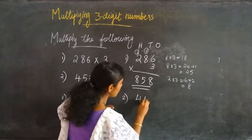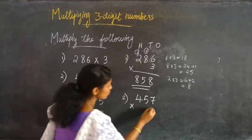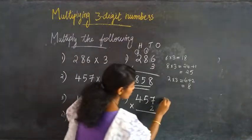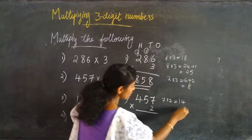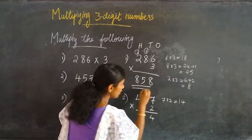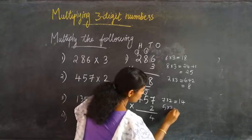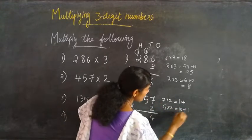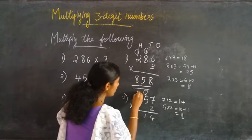Second question: 457 into 2. First we have to multiply 7 into 2. 7 into 2 equal to 14. Writing 4 here and 1 is carried over. Then 5 into 2 equal to 10, plus 1 that is equal to 11. Writing 1 here and this 1 is carried over.